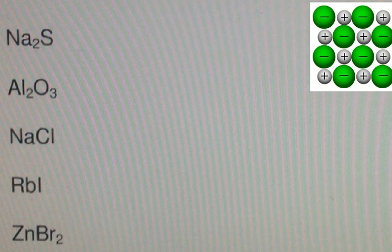Now, let's just say you have to name these guys right here. The first thing you determine is binary or ternary. And we see just two different elements in each of these guys. So all these guys are binary.